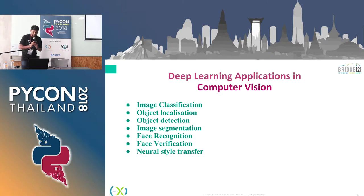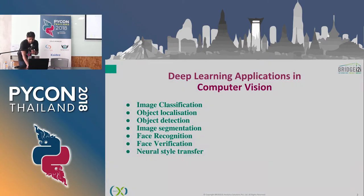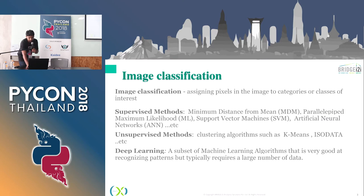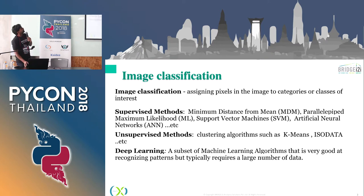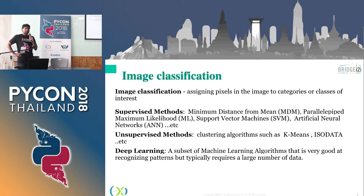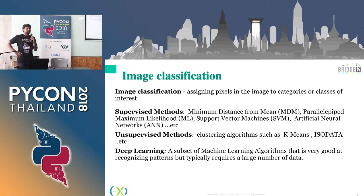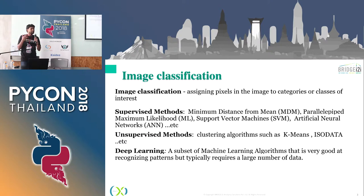Now what deep learning is, we will talk about that. Coming to the most basic application — image classification. An image, as you know, is a simple image, and classification as a term says it all: it's just assigning each pixel of the image to a particular class. You can have a binary class, many classes, and so on.